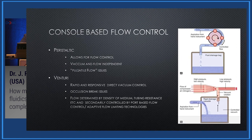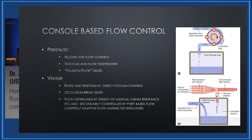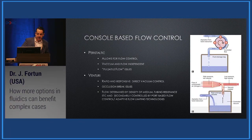Peristaltic machines, more familiar to European colleagues, allow for flow control where vacuum and flow are independent. However, there are issues with pulsatile flow in the posterior segment — we don't want pulsating retina or vitreous. Venturi pump consoles allow for rapid, responsive vacuum control, which increases efficiency and allows quick tissue manipulation, but there are occlusion break issues. Neither system in and of itself is an ideal platform for console-based flow control.